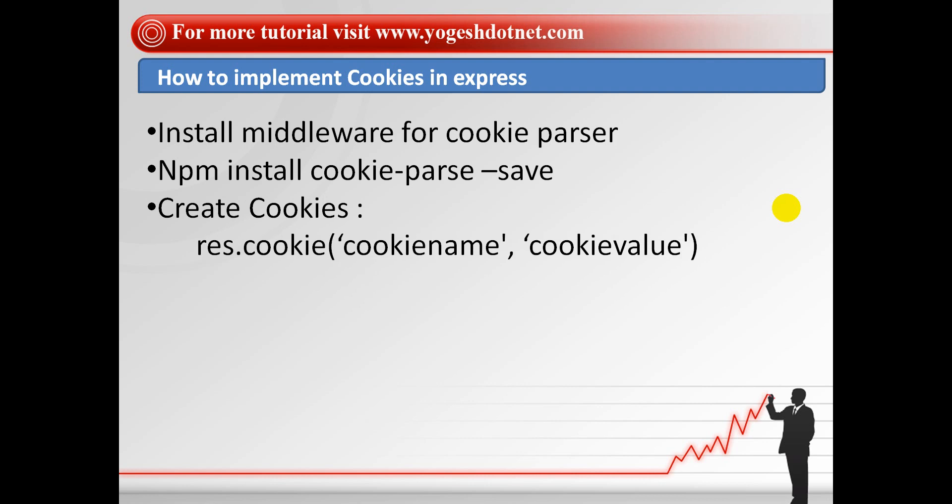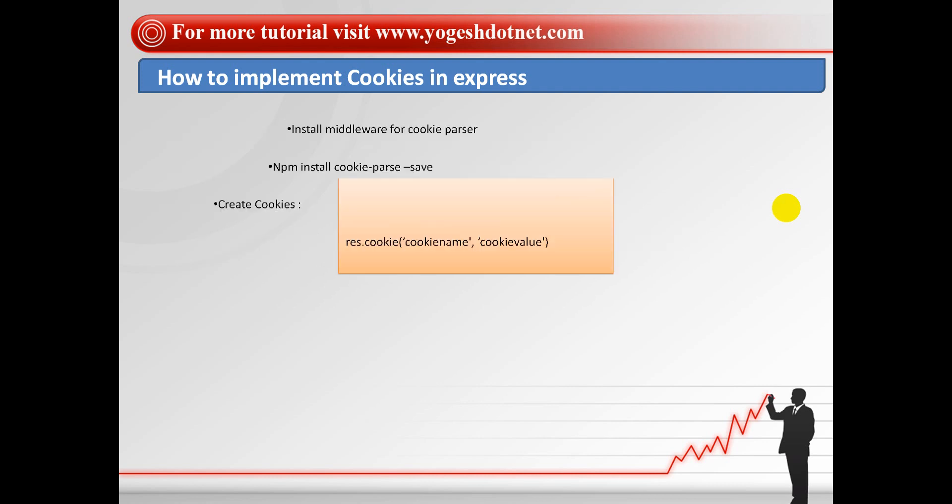How do you create the cookie parser? Cookies use the response object. The res is the response here. res.cookie is one method in which you have to pass two arguments. The first argument is for the cookie name — which name you want to keep. The second argument is the value.